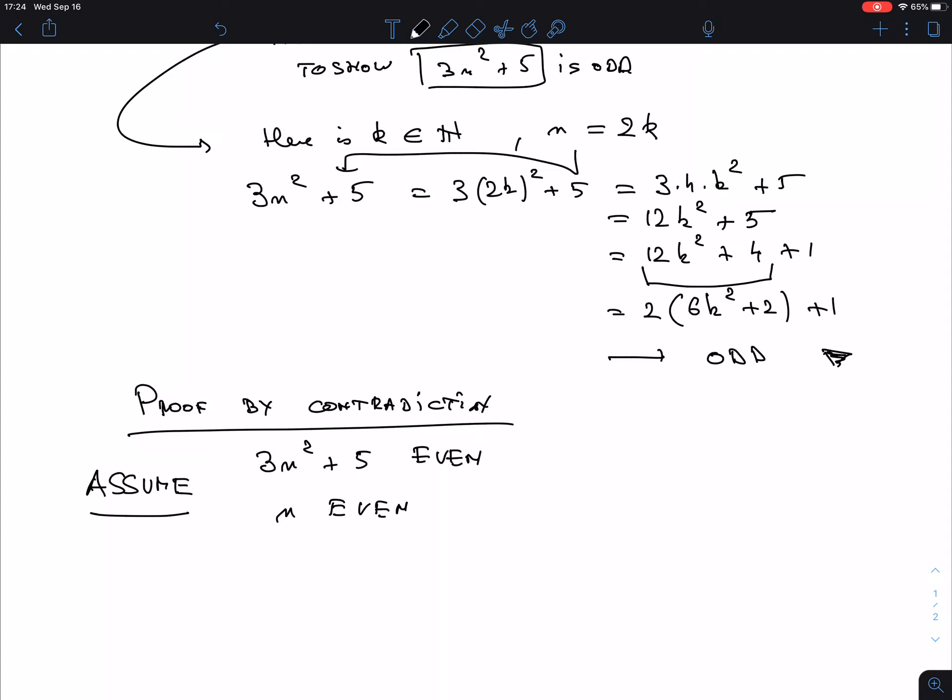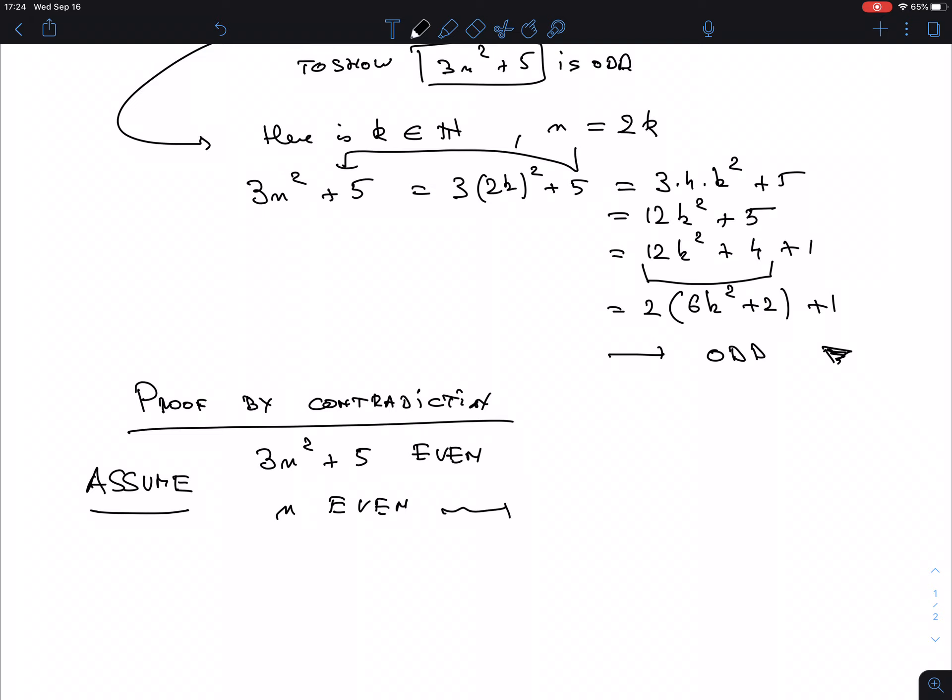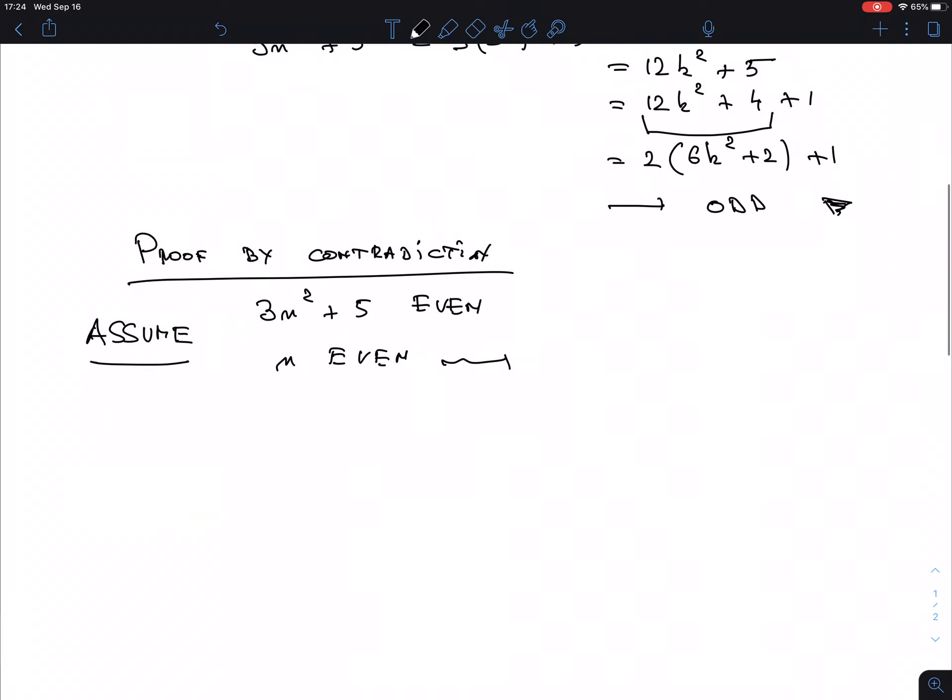That's the difference here, and that makes proof by contradiction sometimes very useful because you get information about every single thing that you're talking about. So you can now play around with these things. Now again, when a complicated expression is even it's very hard to deal with, but when n is even we know this means n can be written as 2 times k.